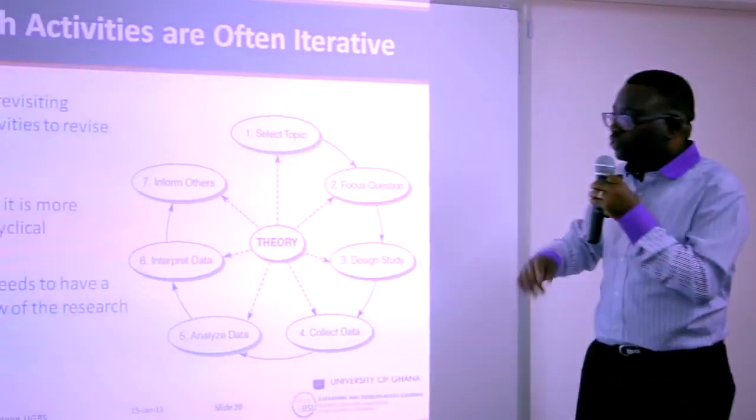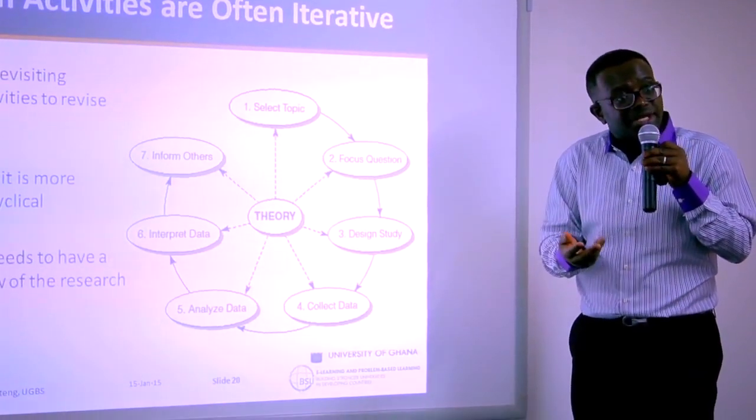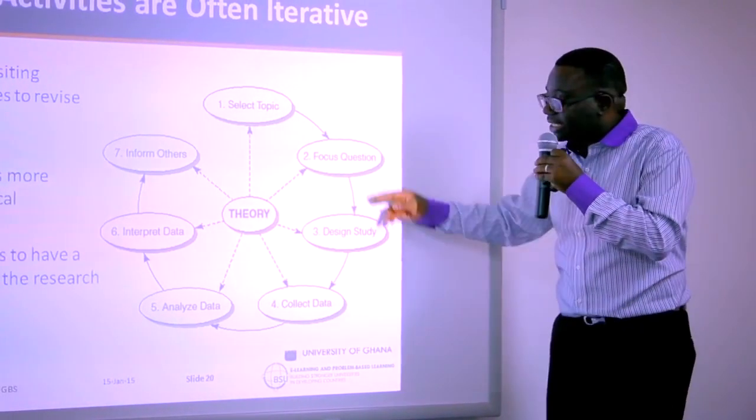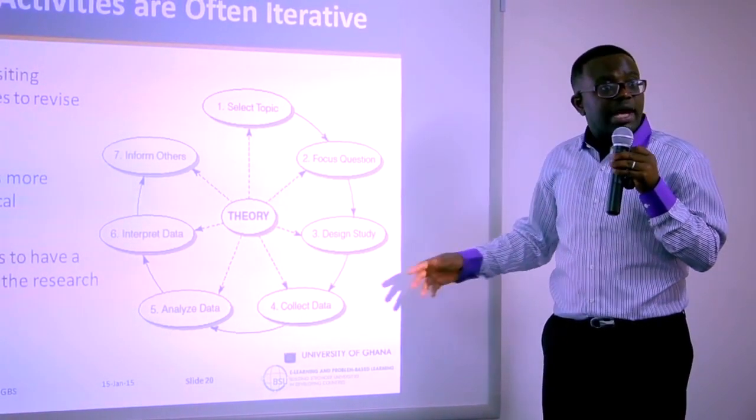If you show up and realize nobody owns a smartphone, the data source has a problem. So you go back and change your design. If you still want to do the study in Agbozome, maybe you have to talk about the impact of basic phones or feature phones — the non-smartphones — on market women. What you realize is that there is no sufficient data for the original question, so you cannot analyze it or answer the question. Hence you have to come back and change the question, and if you change the question, you change the design again.